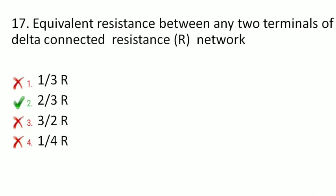Next is: what is the equivalent resistance between any two terminals of a delta-connected resistance network? The options are (1/3)R, (2/3)R, (3/2)R, or (1/4)R. The correct option is (2/3)R. The equivalent resistance between any two terminals of a delta-connected resistance network is (2/3)R.